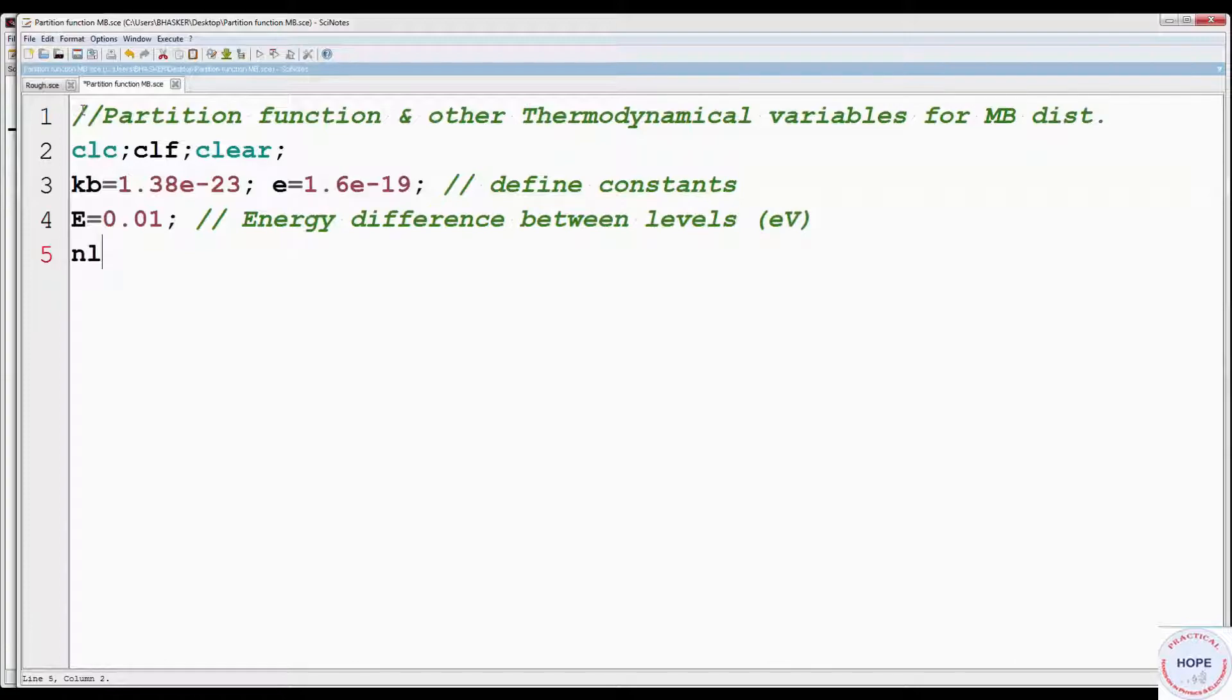Then we have to set the number of energy levels. We are considering three energy levels: 0, 1, and 2. Then define the number of particles. We are going to vary the number of particles from 100 to 500 in steps of 100. Next define the step size of the temperature dT equal to 0.01 Kelvin. Then define the range of the temperature from 1 to 1000 Kelvin.